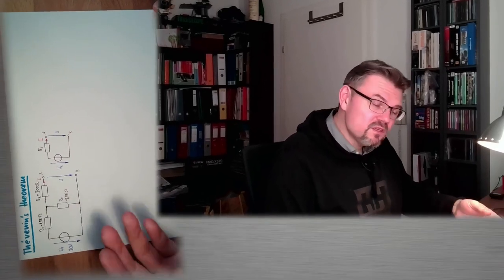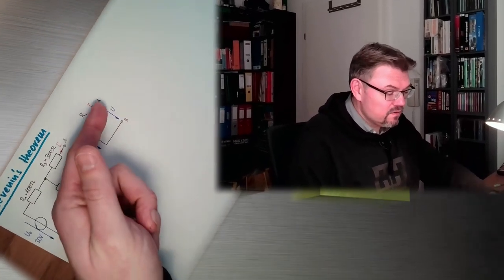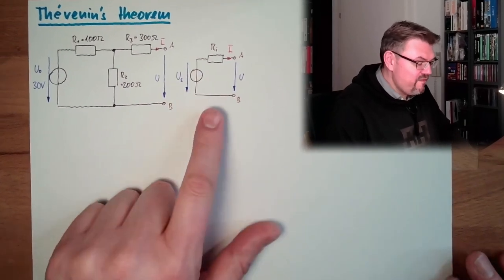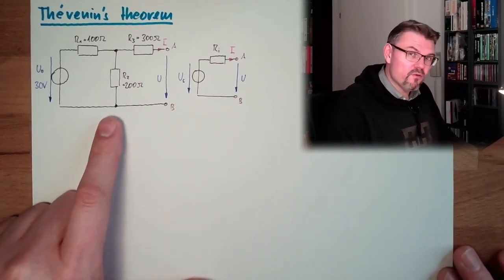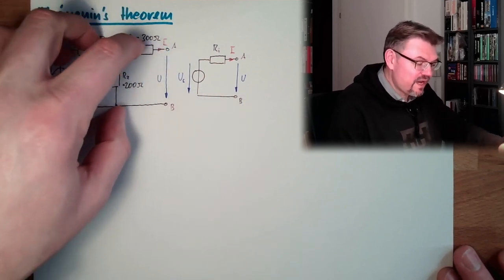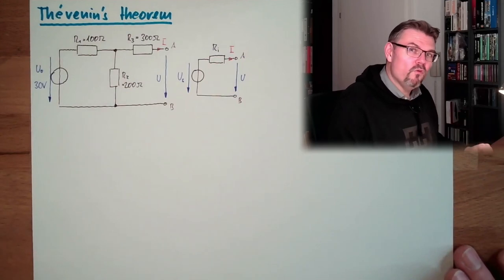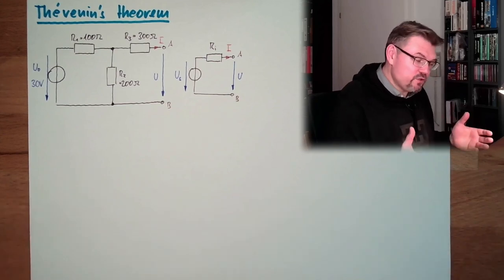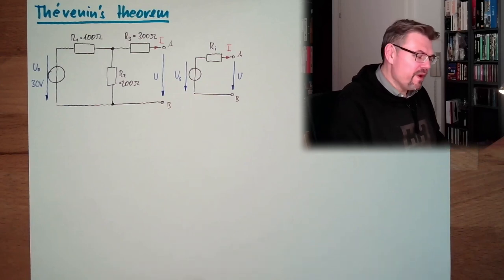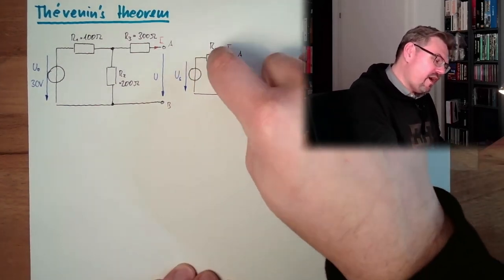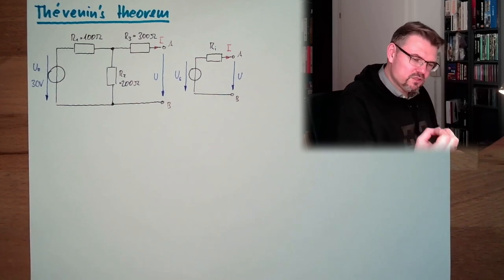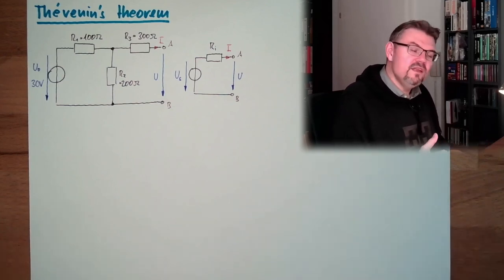So let's say we have a certain network. According to clamps A and B — connectors A and B — we can find values for US and RI which behave exactly like the original network. We can replace all those elements inside by just one real voltage source. We have to get somehow to the values of RI and US: the source voltage and the internal resistance.